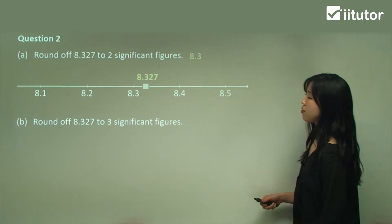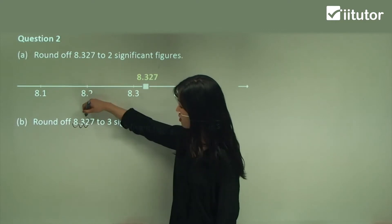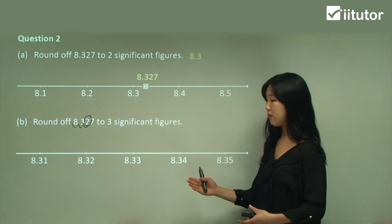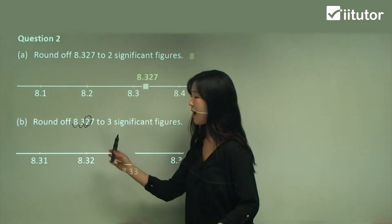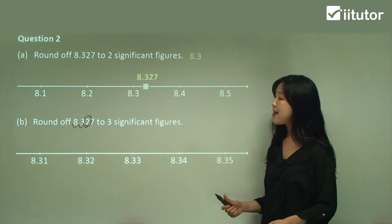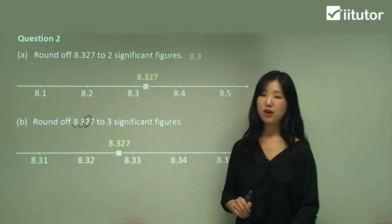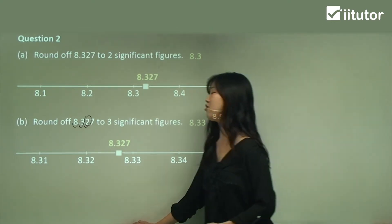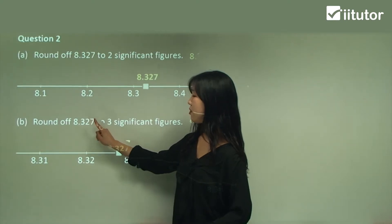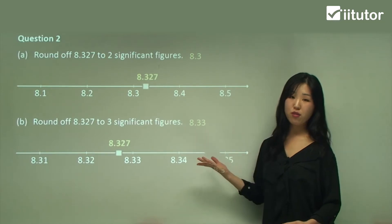Now round 8.327 to three significant figures. We go one, two, three — the last number we're including is two, which is in the hundredths place. So we go 8.31, 8.32, 8.33. 8.327 is between those two numbers and it's closer to 8.33. That's the answer. Without the number line: after our three significant figures the next number is seven, which is greater than five, so we round the two up to three — giving us 8.33.